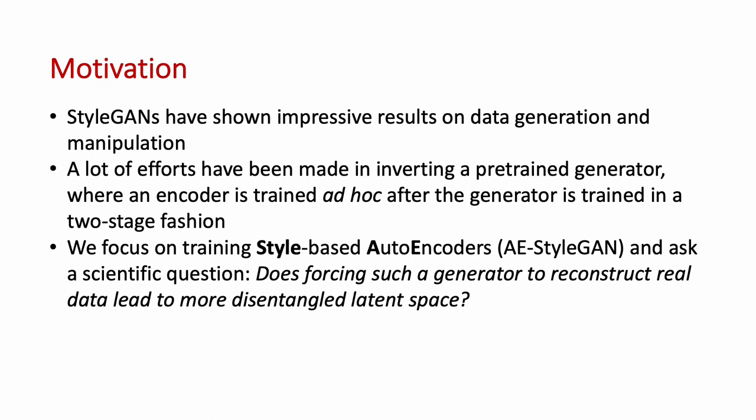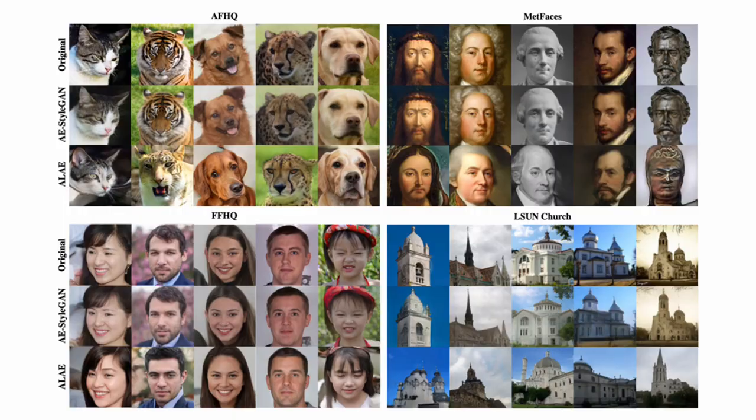Here, we focus on style-based autoencoders that we name AE StyleGAN, and ask a scientific question: does enforcing such a generator to reconstruct real data lead to a more disentangled latent space?